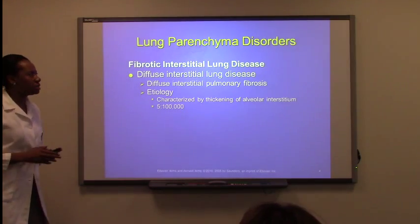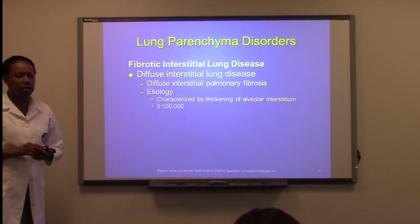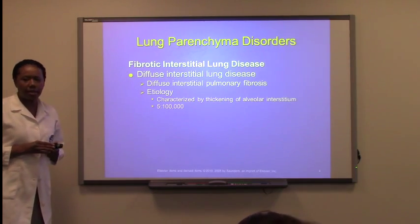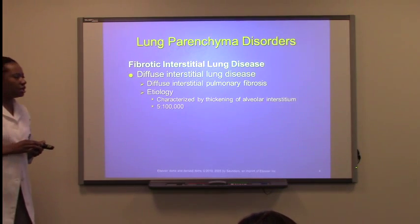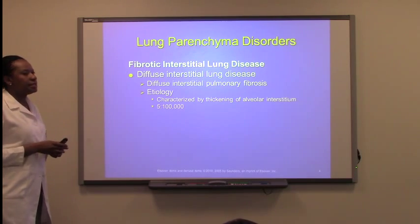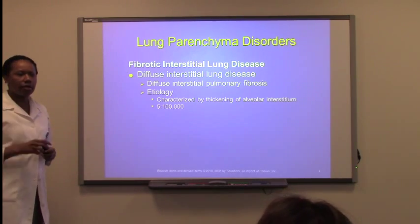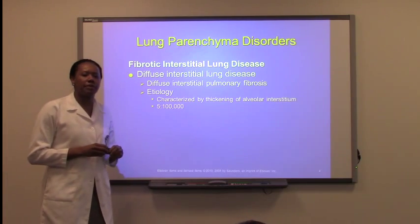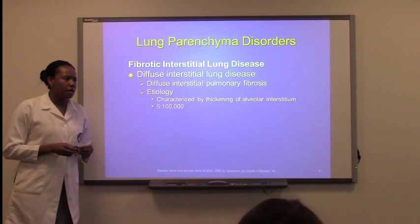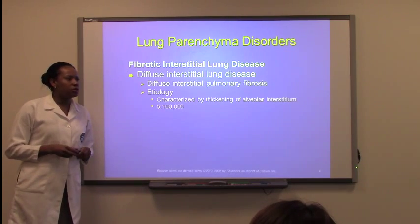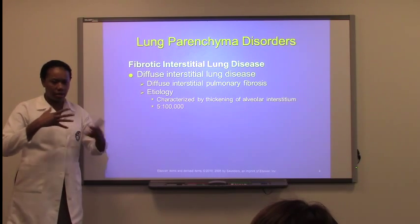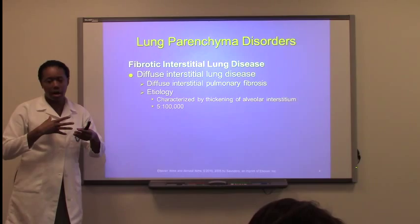The first one we're going to go over is diffuse interstitial lung disease. This is a type of fibrosis that occurs in the pulmonary area — a thickening of the alveolar walls. If we have a thickening or fibrosis of the alveoli, the main issue would be obstruction of diffusion — diffusion of oxygen and carbon dioxide — so there will be an issue with that crossing.